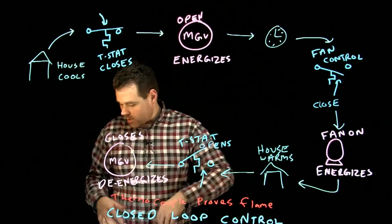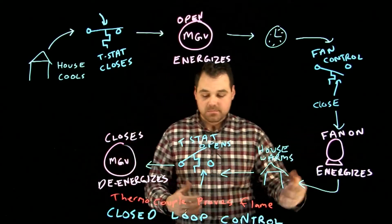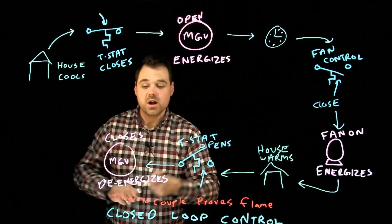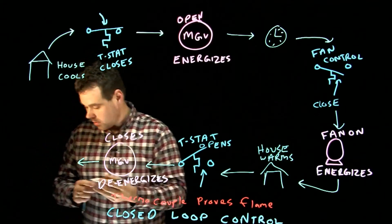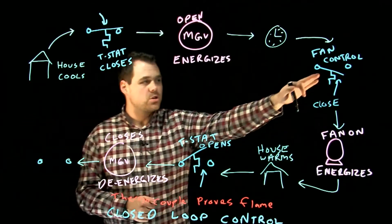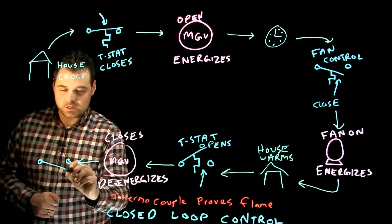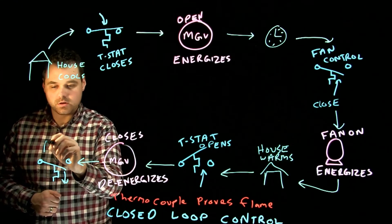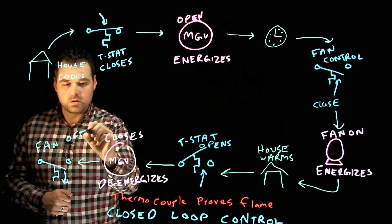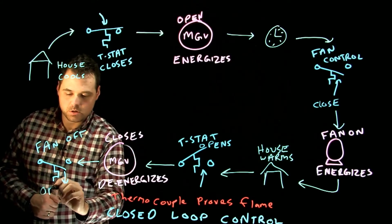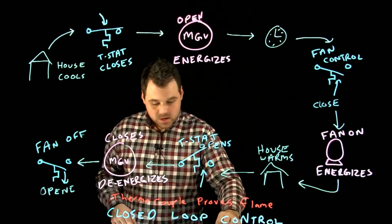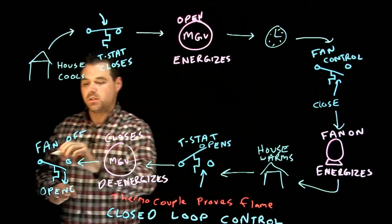Now that our main gas valve is closed, eventually our plenum begins to cool down. Once the plenum cools down enough, our fan control switch, that normally open switch that closed, is actually going to turn the fan off because the switch opened.